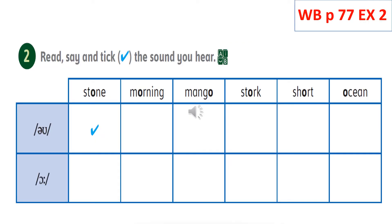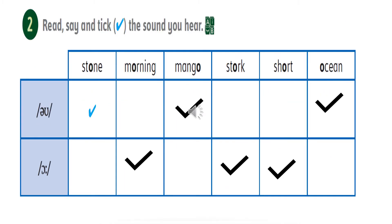Now open your workbook page 77, activity 2. Read, say, and tick the sounds you hear. Stop the video, tick the correct sound, and then come back to check your answers: stone, morning, mango, stalk, short, ocean.